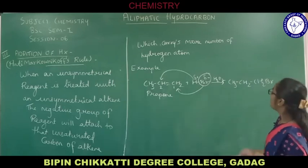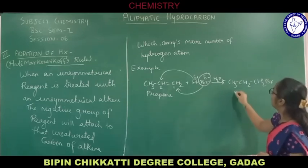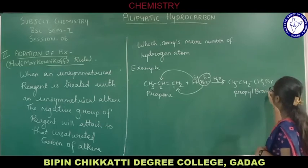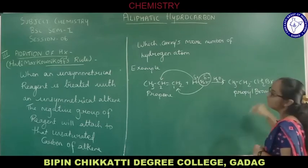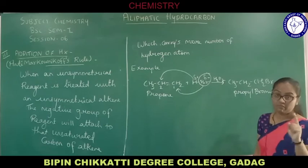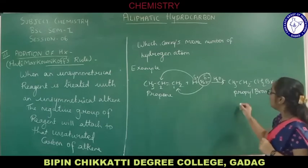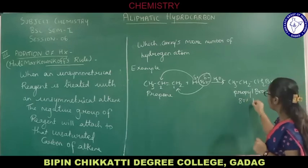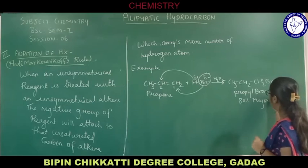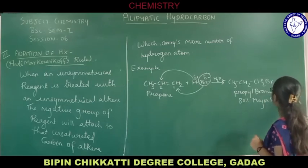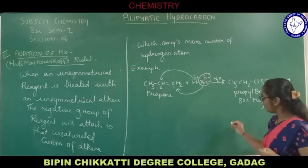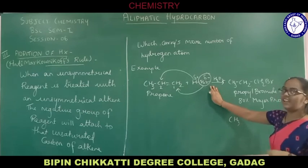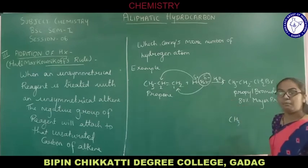The product formed is CH₃-CH₂-CH₂Br. The name of this product is propyl bromide (common name) or 1-bromopropane (IUPAC name). This product is considered to be the 80% major product. The minor product will be exactly the opposite of this.